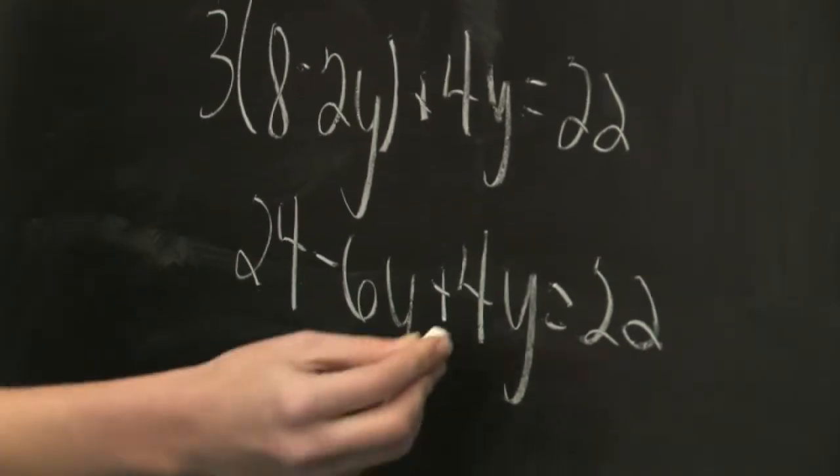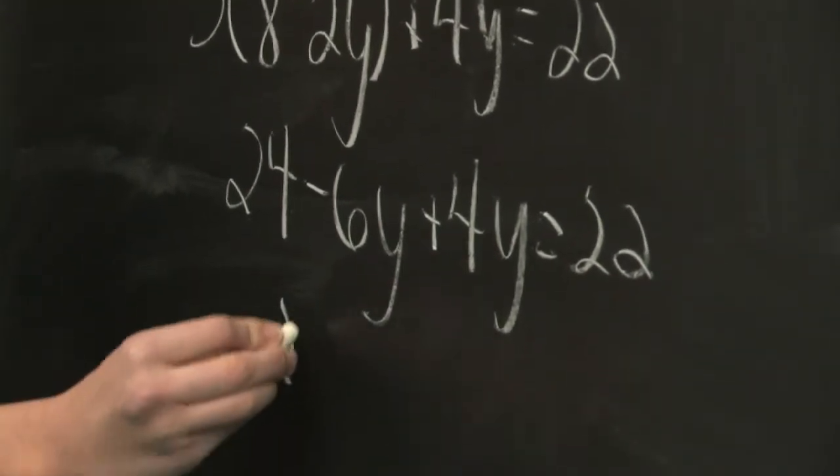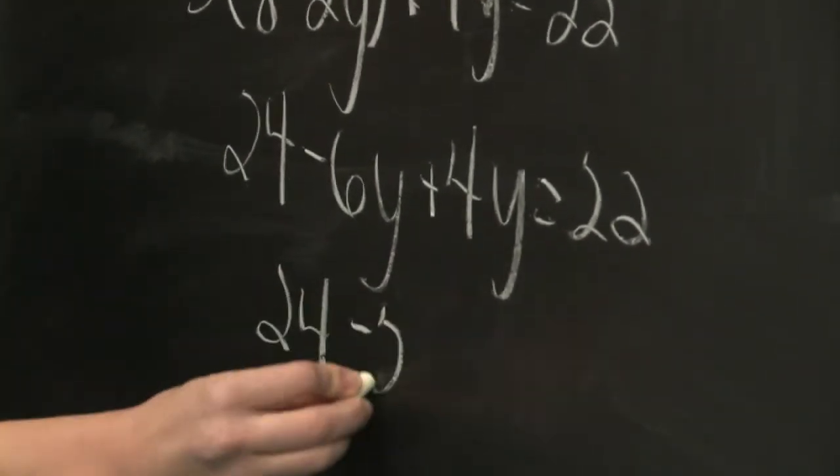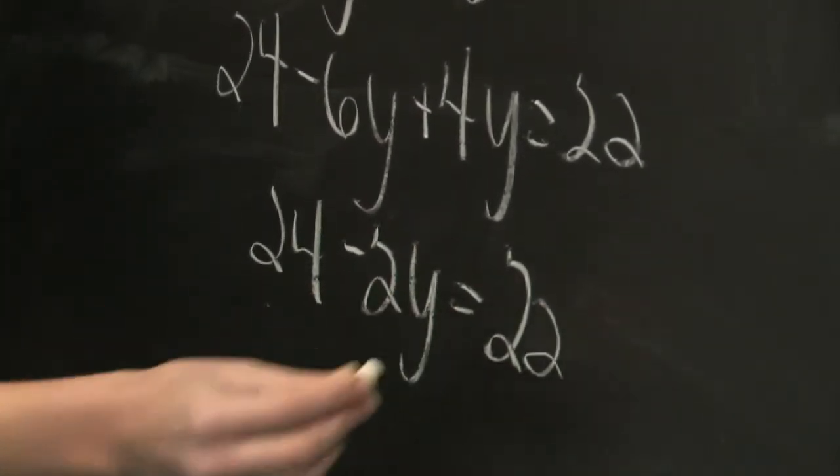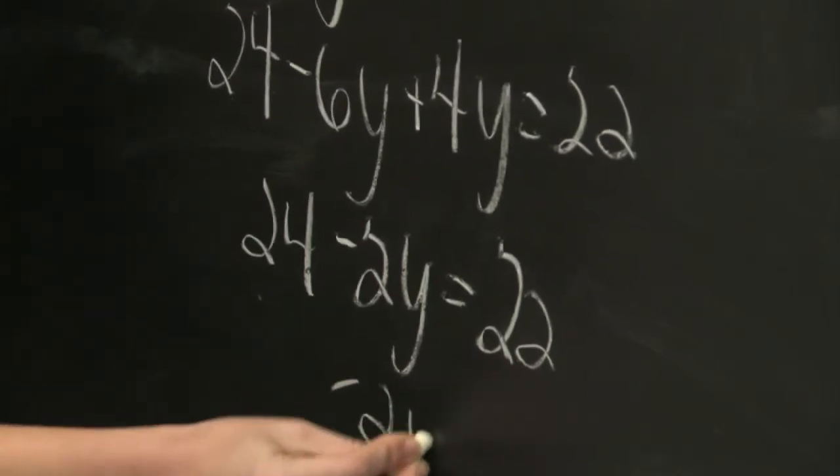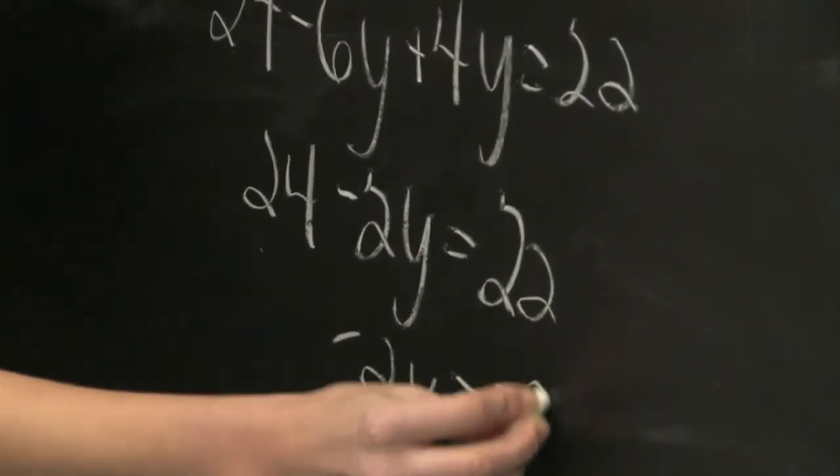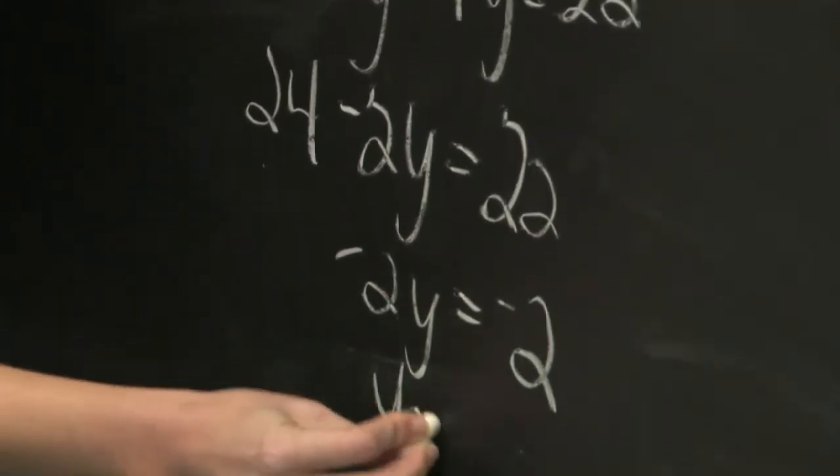We'll collect like terms here. We have 24 minus 2y is equal to 22. When we move the 24 over, we see that minus 2y is equal to minus 2. So y is equal to 1.